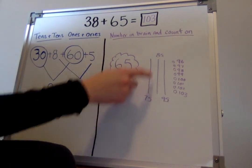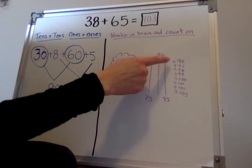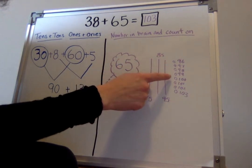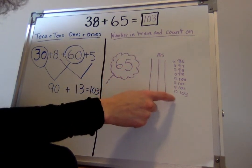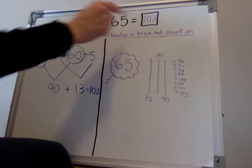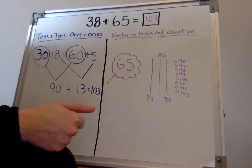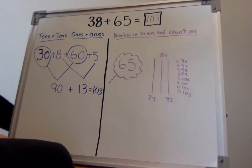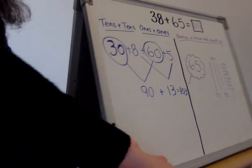65, 75, 85, 95, 96, 97, 98, 99, 100, 101, 102, 103. So 38 plus 65 equals, you got it, 103. I knew you guys would be able to solve it.